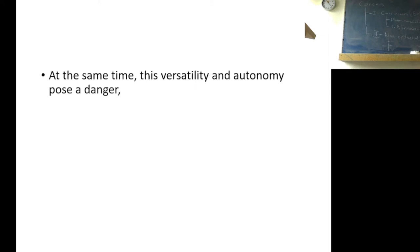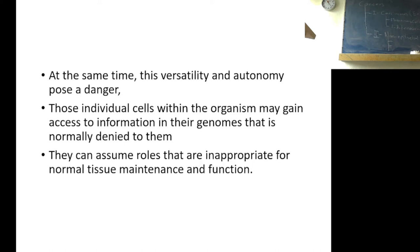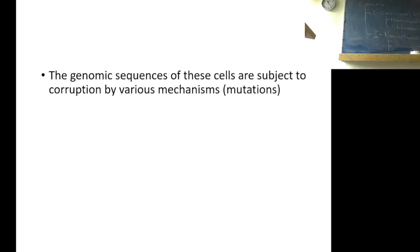At the same time, this versatility and autonomy pose a danger. Those individual cells within the organism may gain access to information in their genomes that is normally denied to them. They can assume roles that are inappropriate for normal tissue maintenance and function. The genomic sequence of these cells are subjected to corruption by various mechanisms, which are called mutations.